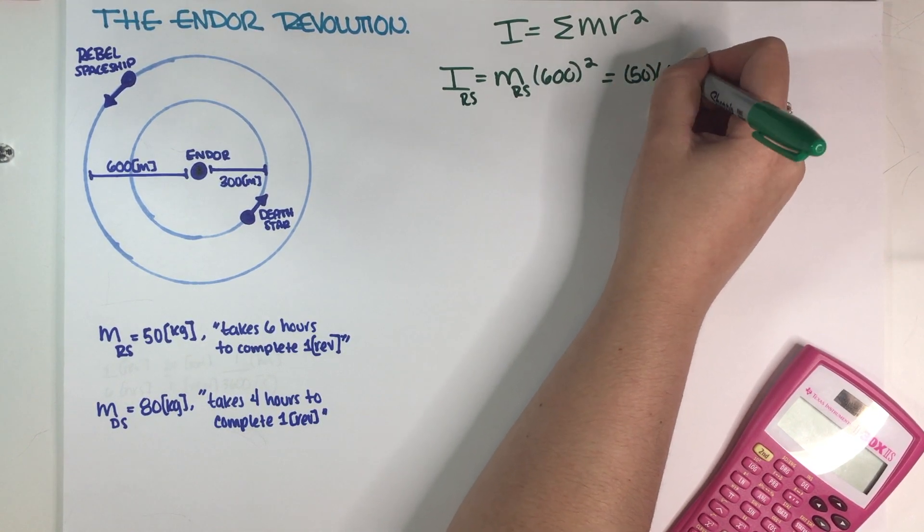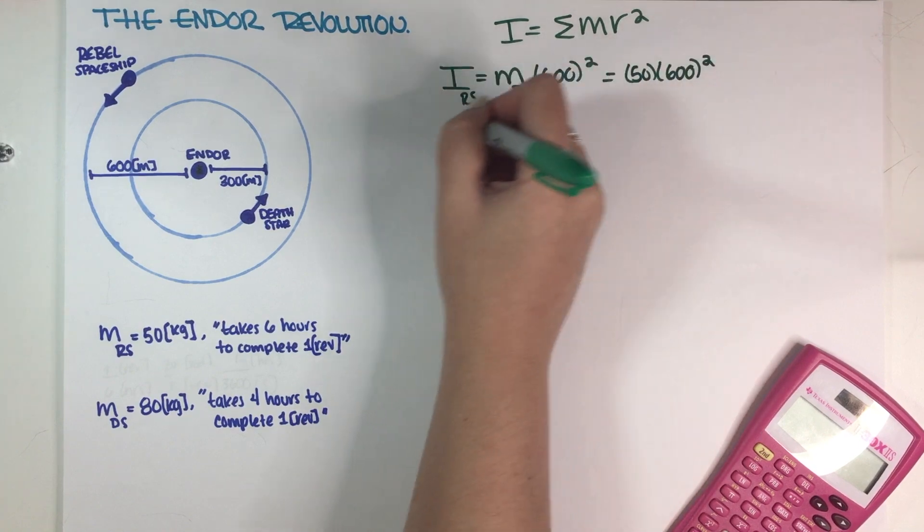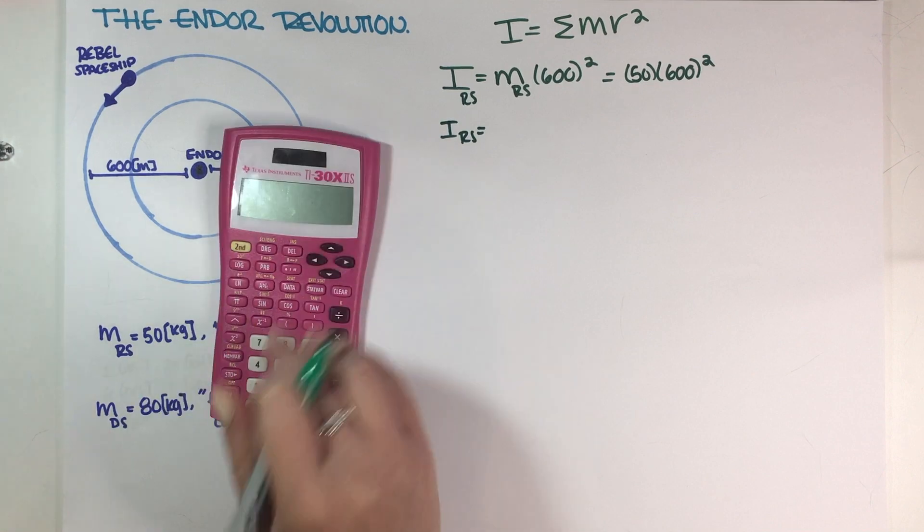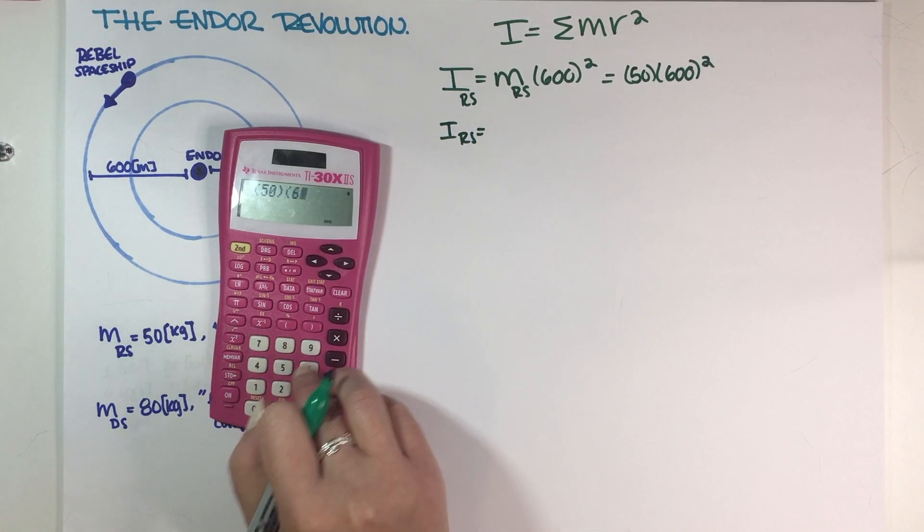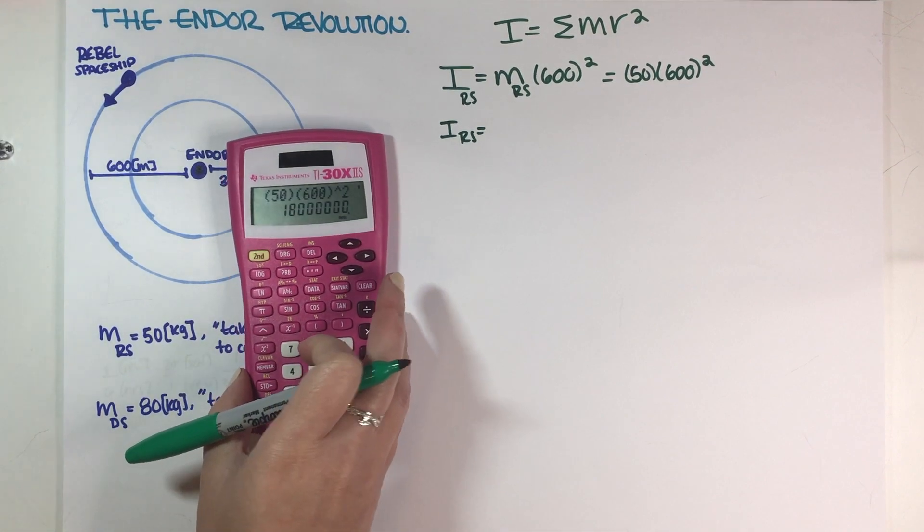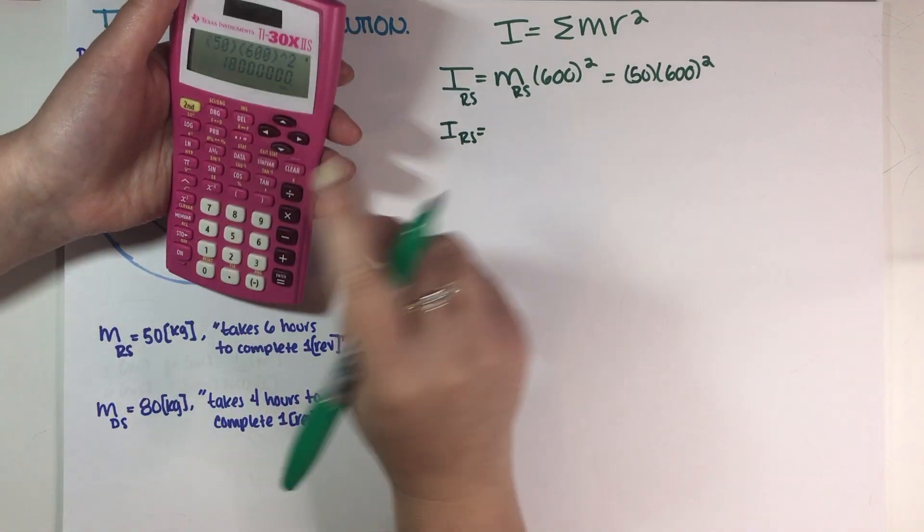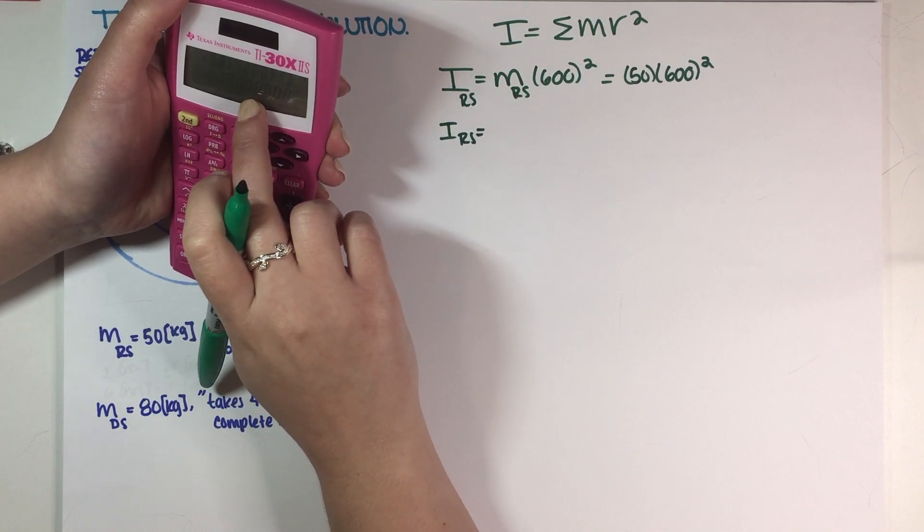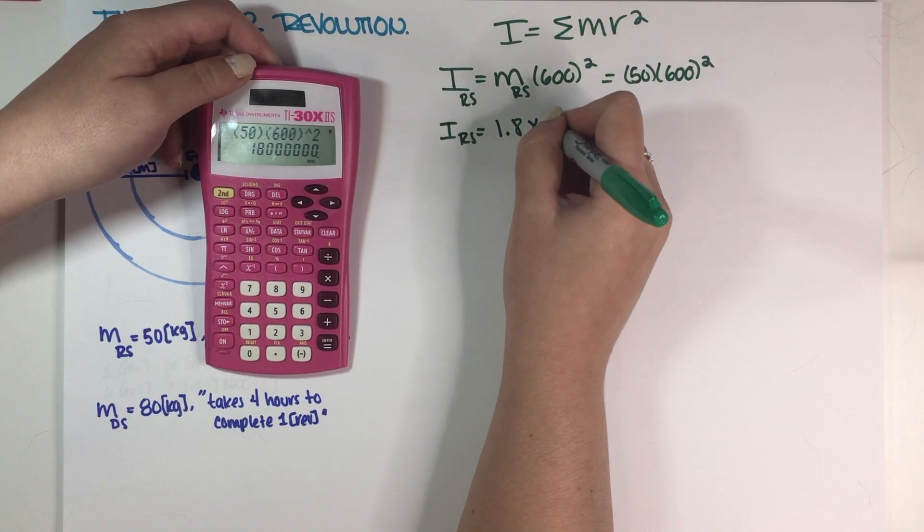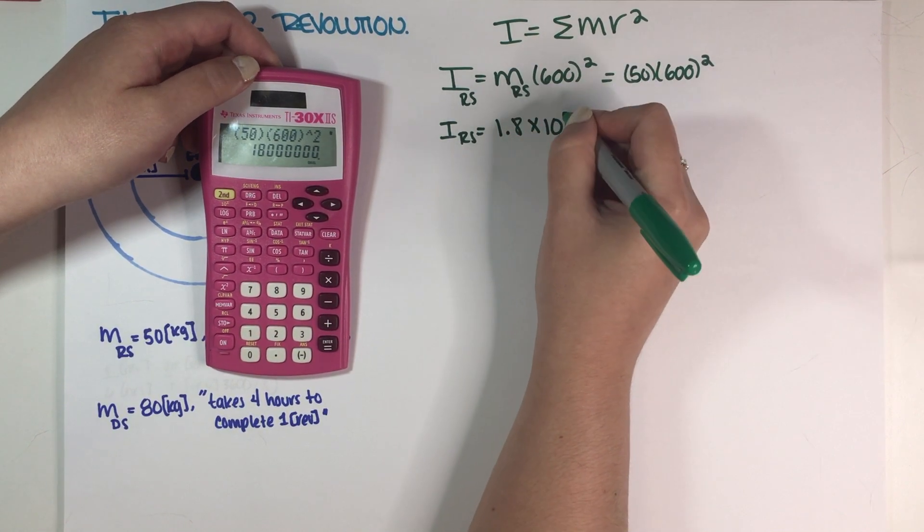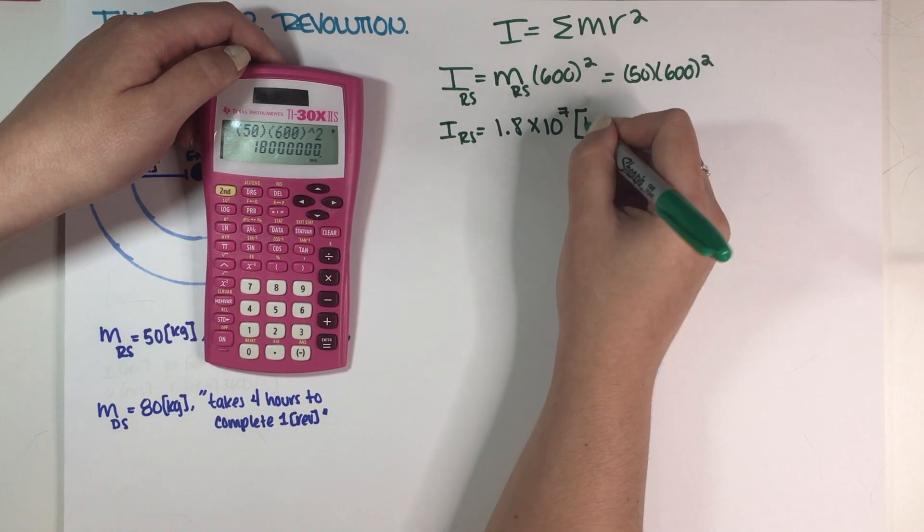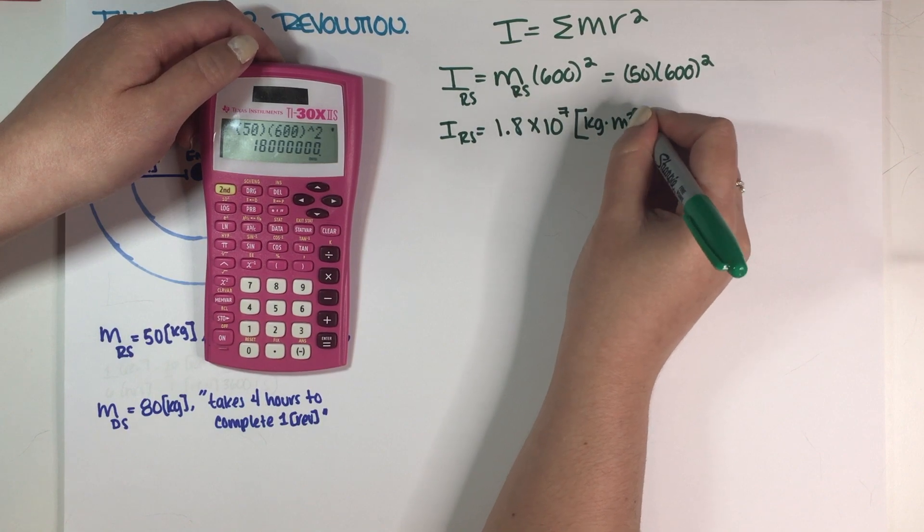This is the mass of the Rebel spaceship times R squared. For the Rebel spaceship, that would be 600 meters according to the problem. The mass is 50 kilograms. So the moment of inertia for the Rebel spaceship is equal to 50 times 600 squared, which equals 1.8 times 10 to the 7. Units are kilograms times meters squared.